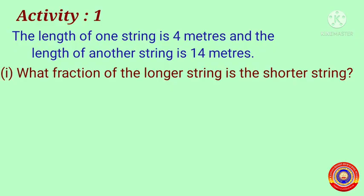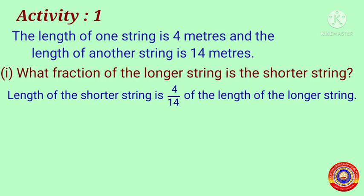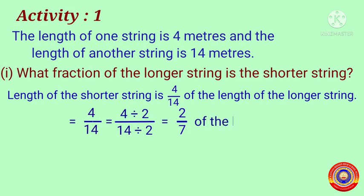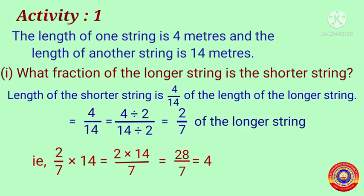Next, Activity number one. The length of one string is four meters and the length of another string is 14 meters. We have to find what fraction of the longer string is the shorter string. We write the fraction: shorter string with respect to the length of the longer string. Therefore, the length of shorter string is four-by-14 of the length of the longer string. In lowest form, dividing numerator and denominator by two gives two-by-seven of the longer string. That is, two-by-seven multiplied by 14 equals 28-by-7, which equals four.